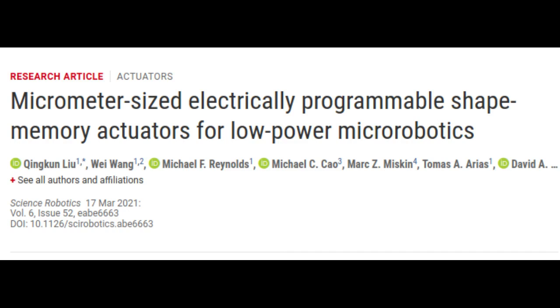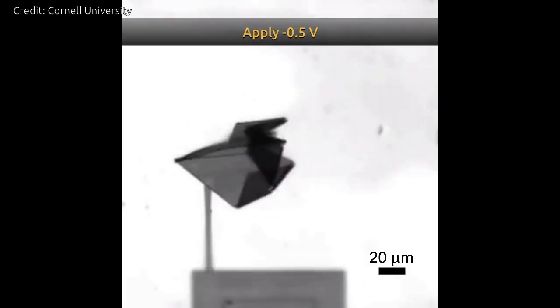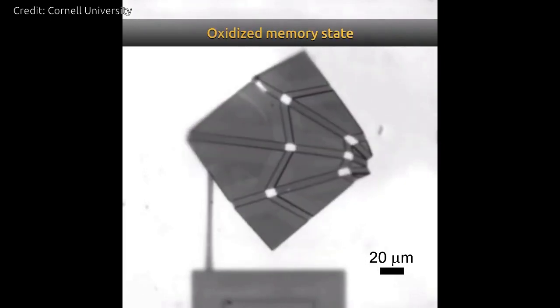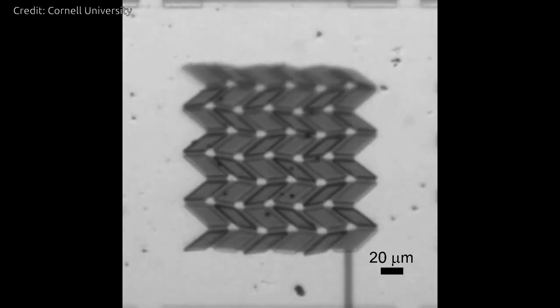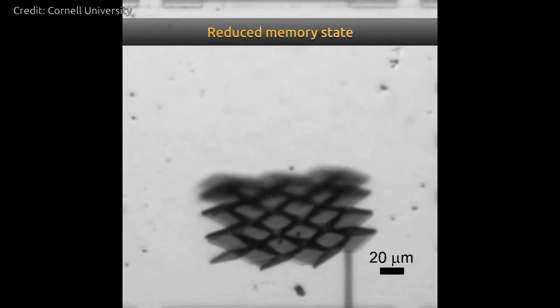But just as importantly, if we want our robot to move, we need it to be able to bend. Cornell researchers have created micron-sized shape memory actuators that enable atomically thin, two-dimensional materials to fold themselves into 3D configurations. All they require is a quick jolt of voltage. And once the material is bent, it holds its shape even after the voltage is removed.